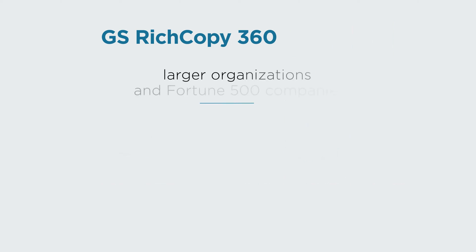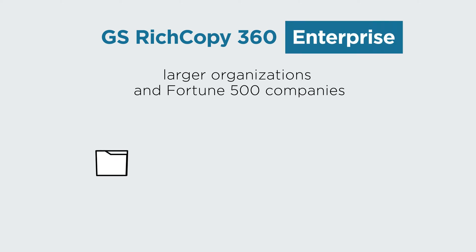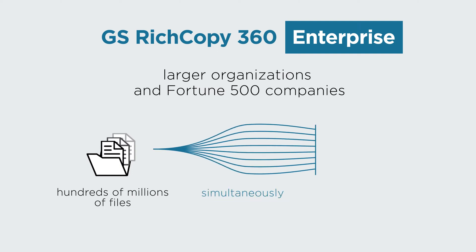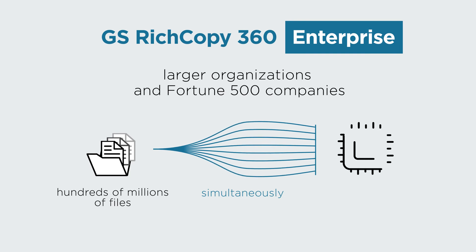While larger organizations and Fortune 500 companies will value the robustness of GS RichCopy 360 Enterprise, which gives you the power to migrate hundreds of millions of files simultaneously, thanks to its multi-thread support for up to 256 threads to ensure that migrations are performed ultra-fast.